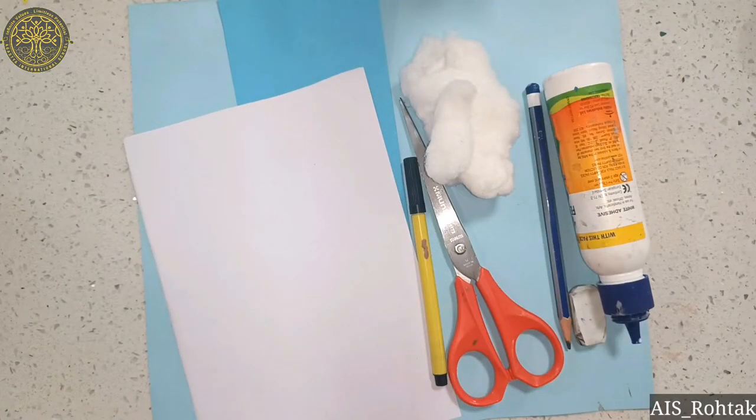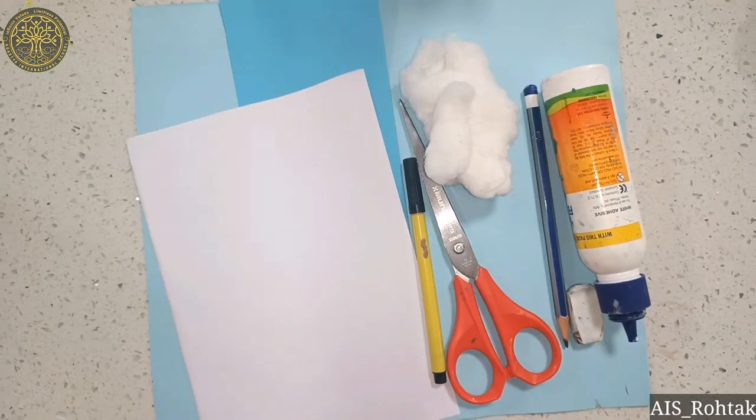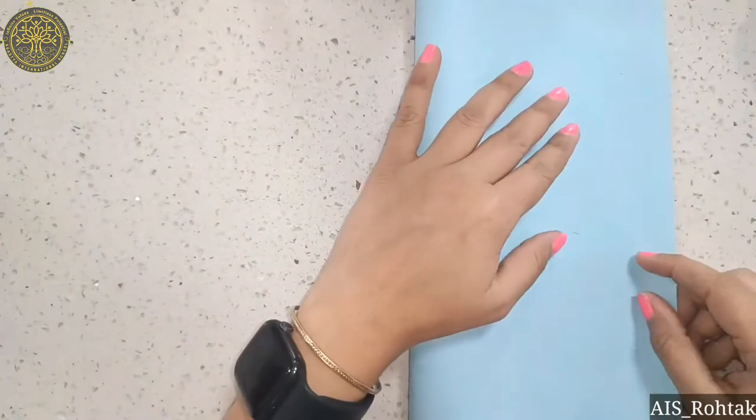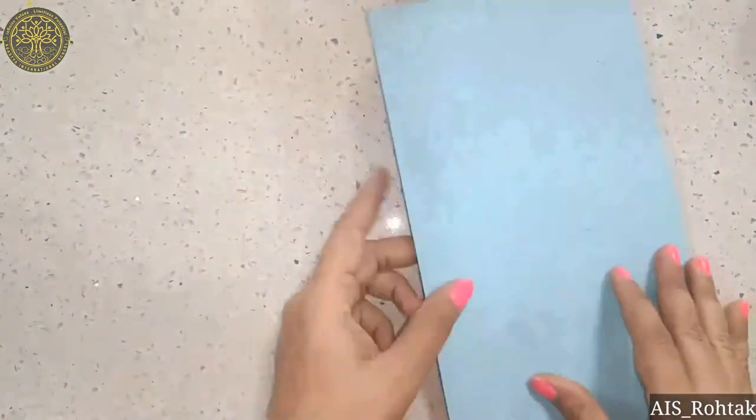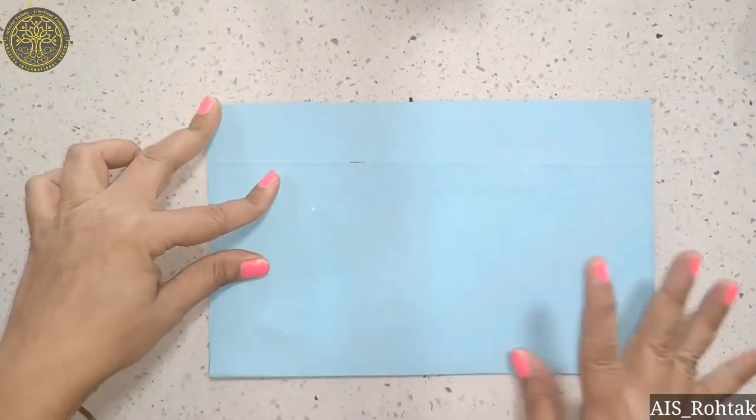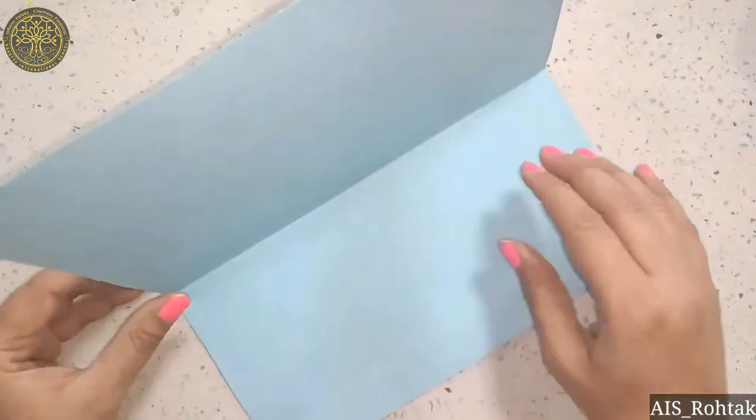Hello kids, today we are going to make a craft on polar region and mountains. Let's start. First, we take a light blue color sheet and fold it into one fourth portion, then keep it aside.